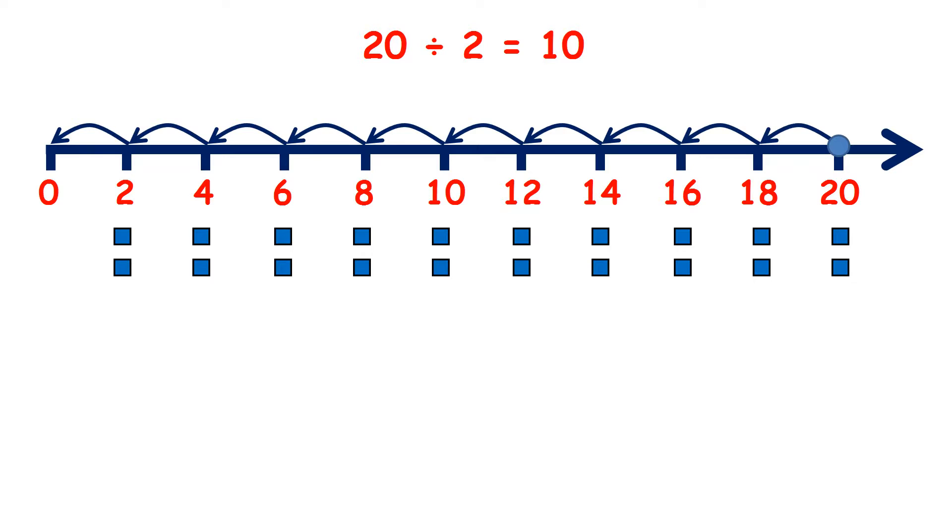So 20 divided by 2 is 10, because if I start on 20 and take away 2 each time, I'll need 10 jumps to get to 0.